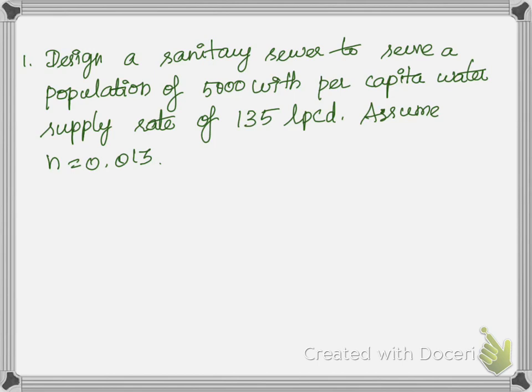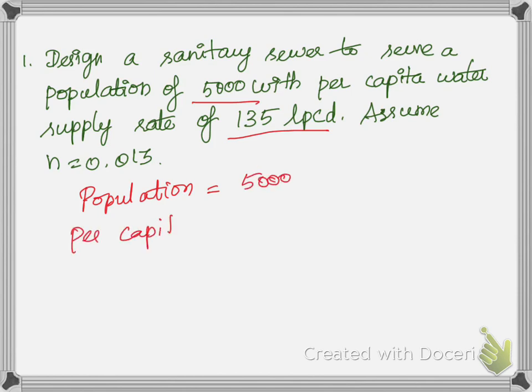In this problem, it is given: design a sanitary sewer to serve a population of 5000, the per capita water supply rate is 135 LPCD, and assume n is equal to 0.013. Not a lot of additional data is given, so we are going to assume all necessary data. The given data: population is 5000, and per capita demand is 135 LPCD — that is, litres per capita per day.